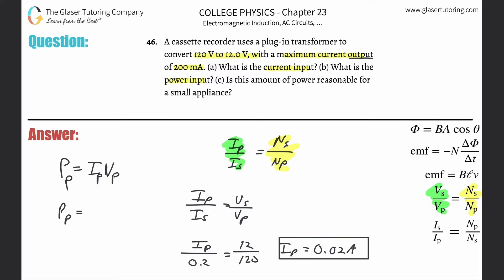All right. Remember consistency is key. So the primary current we just solved for, which is 0.02. The primary voltage was the 120 and that's all we got to do now. So it's going to be basically 120 times 0.02 and we get 2.4. So we got 2.4 and that's in terms of watts.